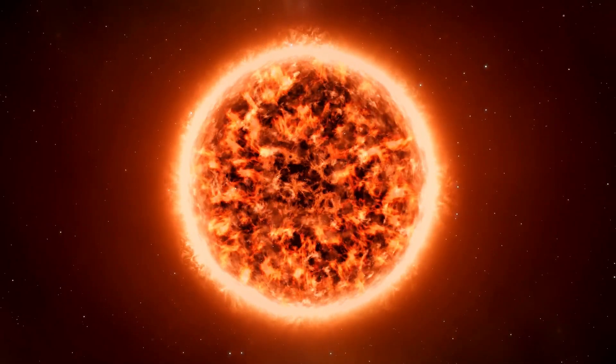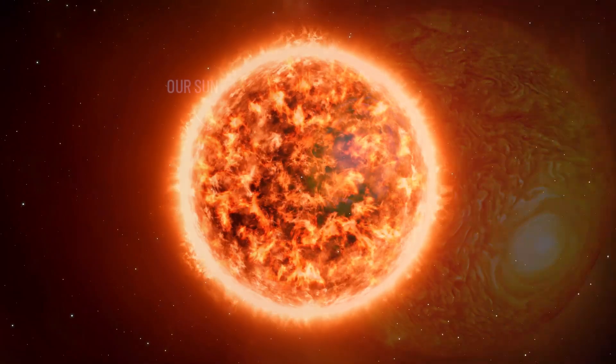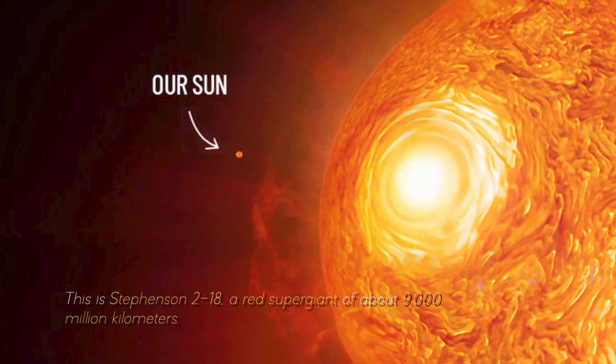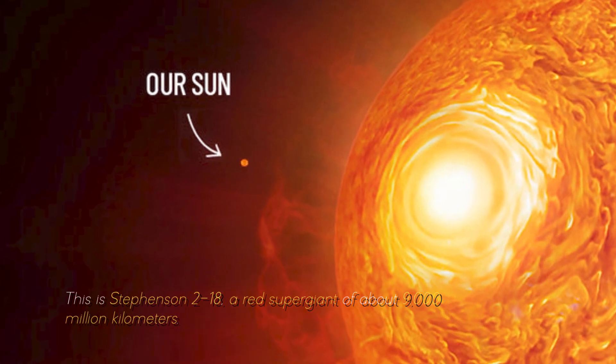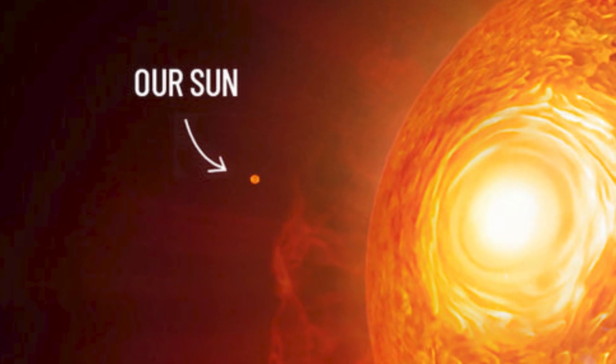Even our sun would also look small if we compare it with the largest star in the universe. This is Stevenson 218, a red supergiant of about 9,000 million kilometers, which looks like this in front of our star, something really spectacular.